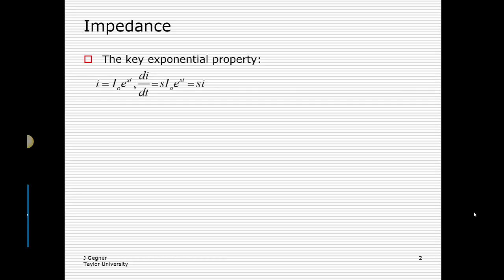The key exponential property leveraged in the concept of impedance is that if you have a current I of the form e to the st, where t is a variable of time and s is some constant, then when you take the derivative of that current, you get s times the current back. It retains the same functional form. We can do the same thing with voltage: if V equals V0 e to the st, its derivative is s times the voltage.